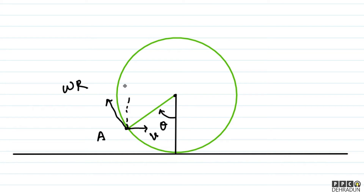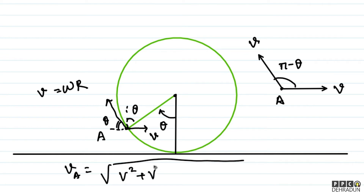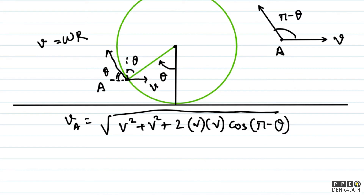Considering the angles — by alternate interior angles, this angle becomes θ, and similarly the other angle is also θ. The two vectors V and ωR are equal in magnitude. So we have two vectors, each of magnitude V (since ωR = V). The angle between them is related to θ, and the speed of point A comes out to be: VA = √(V² + V² + 2·V·V·cos(π − θ)).